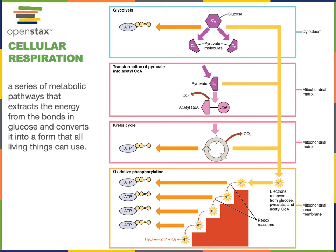At the end of oxidative phosphorylation, the energy released from the oxidation of glucose is used to drive the endergonic chemical reaction of ATP synthesis.